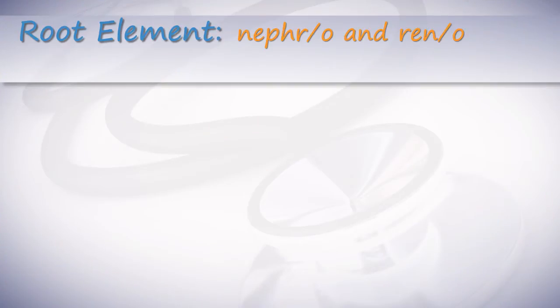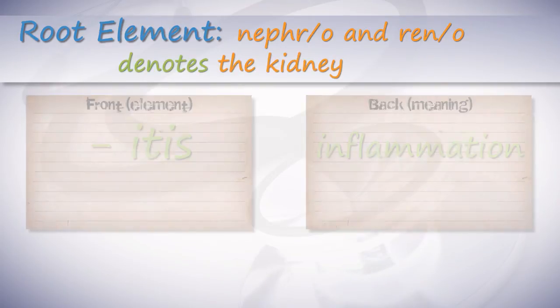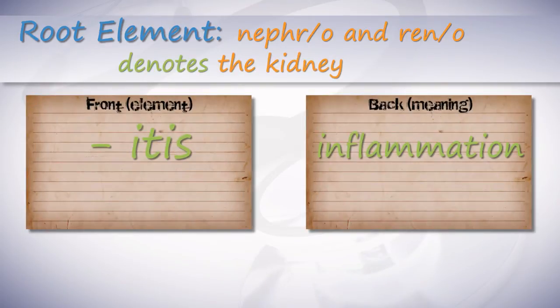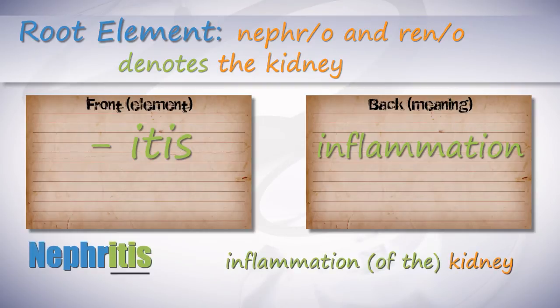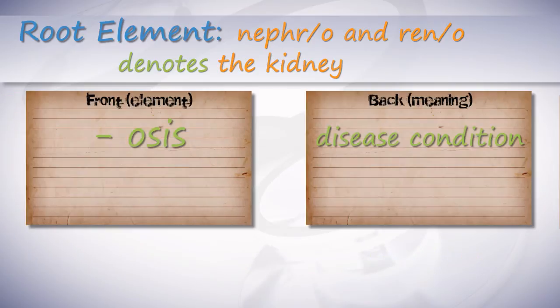Root elements nephro and reno denote the kidney. The suffix -itis means inflammation. The term nephritis means inflammation of the kidney.